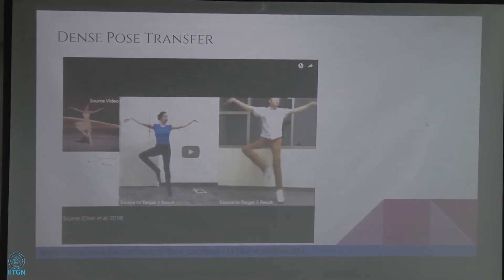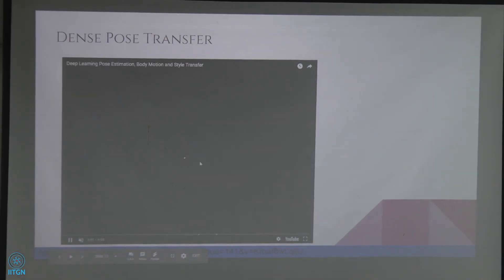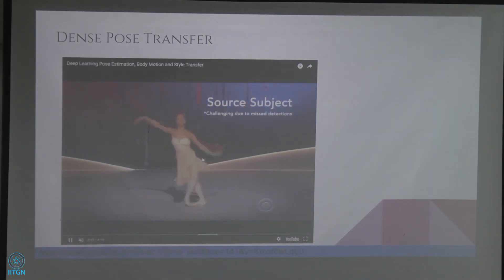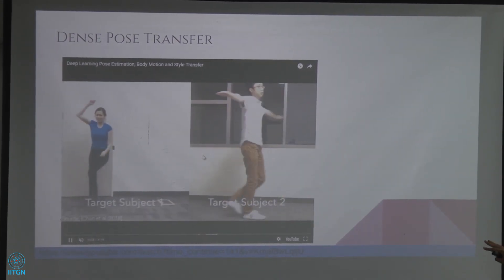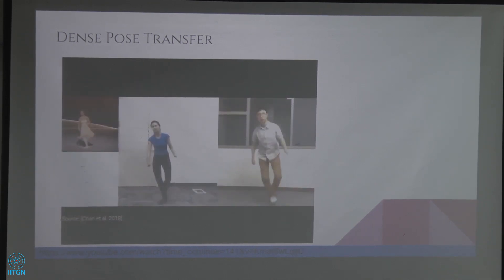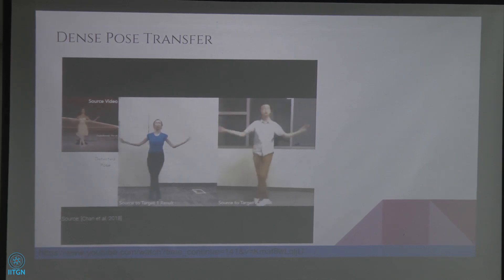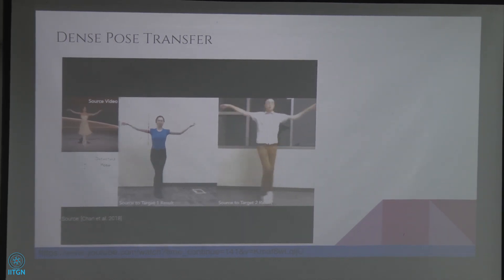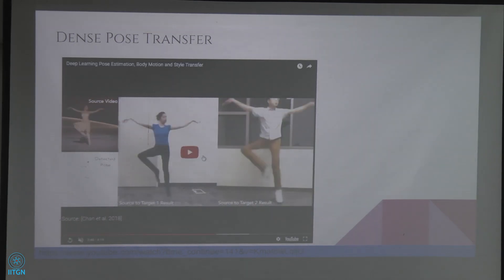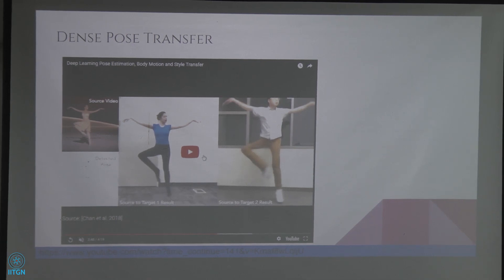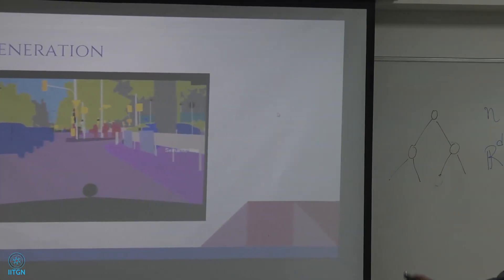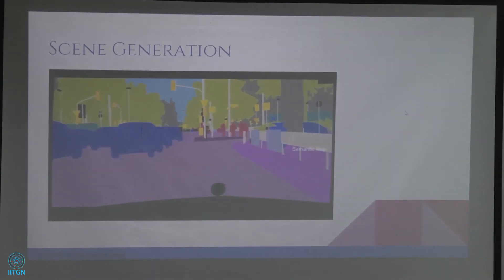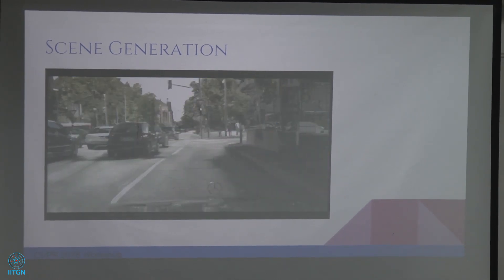This is something you will love to watch — any dancers out here? Most of us, like me, can't dance. So this shows a professional dancer and people like us who know nothing about dance. But using GANs, we can make these people dance professionally. This is a fake video generated using GANs — one of the most recent applications I found while surfing. There are numerous such applications that have been there and will continue to emerge in the future. Another application is scene generation, where you have infrared images and can actually generate a real-time scene.